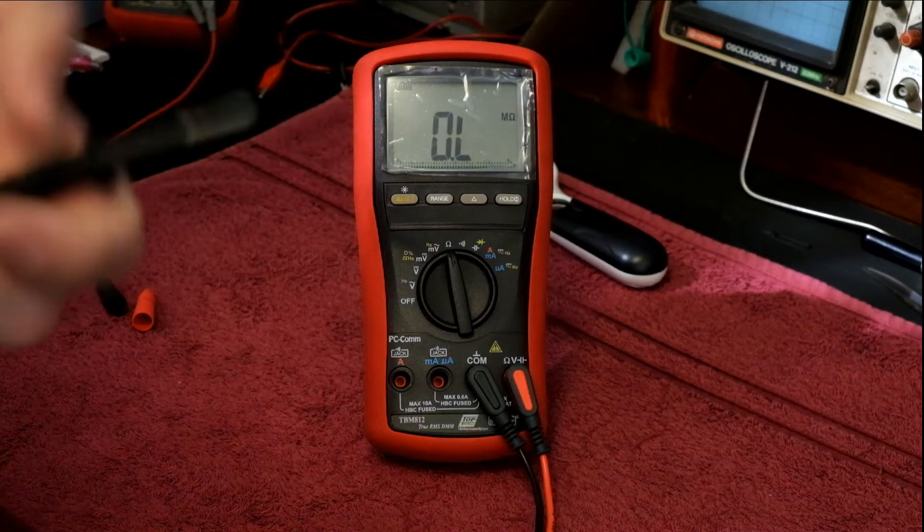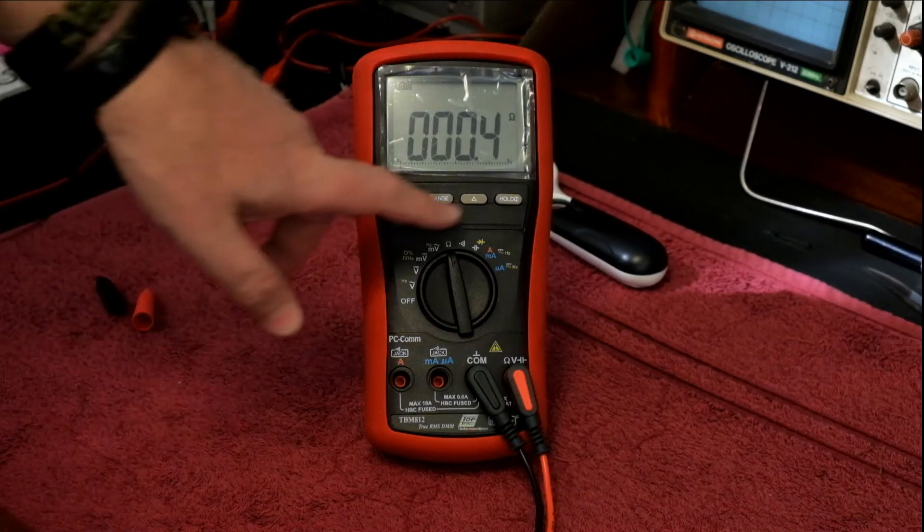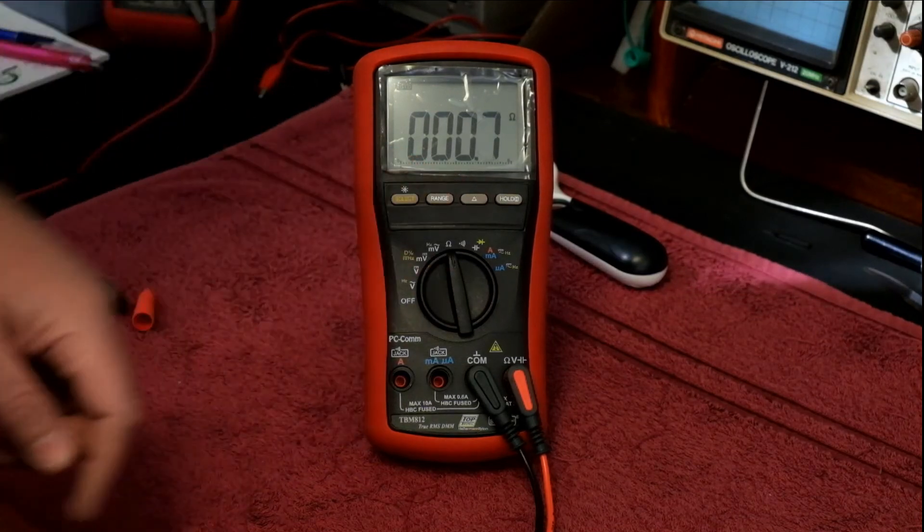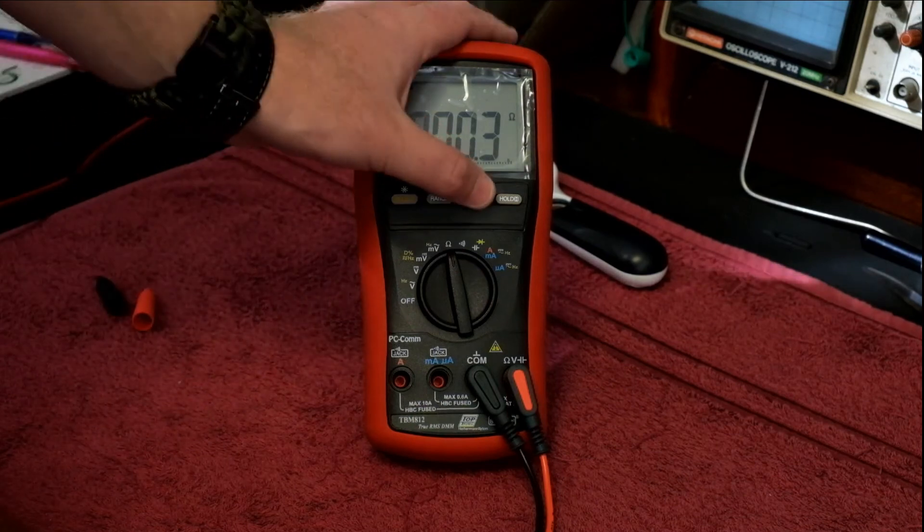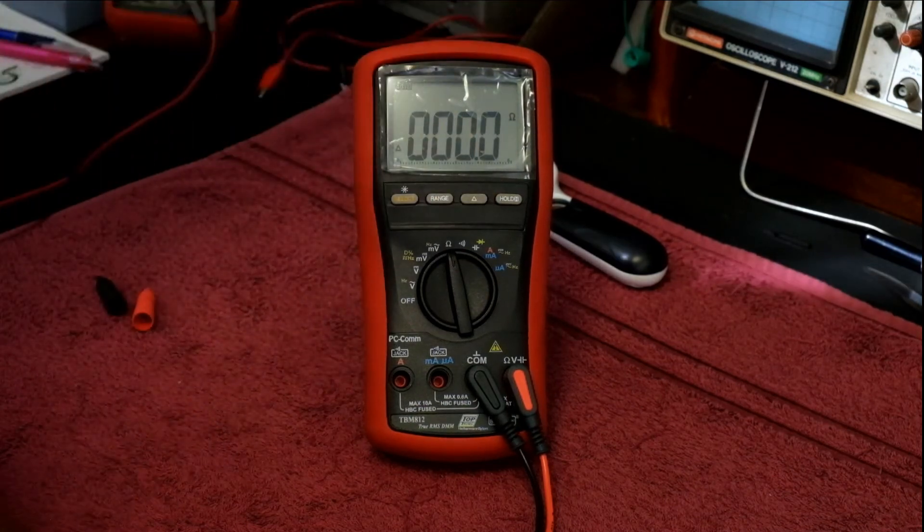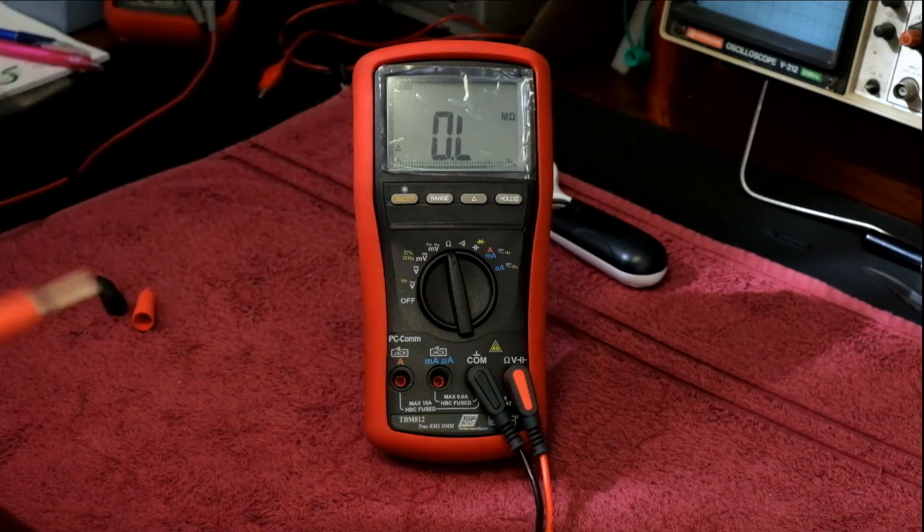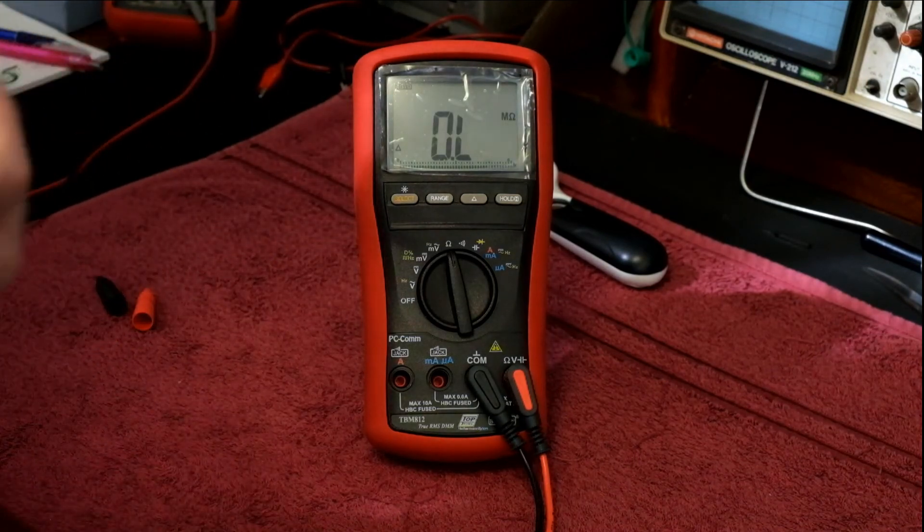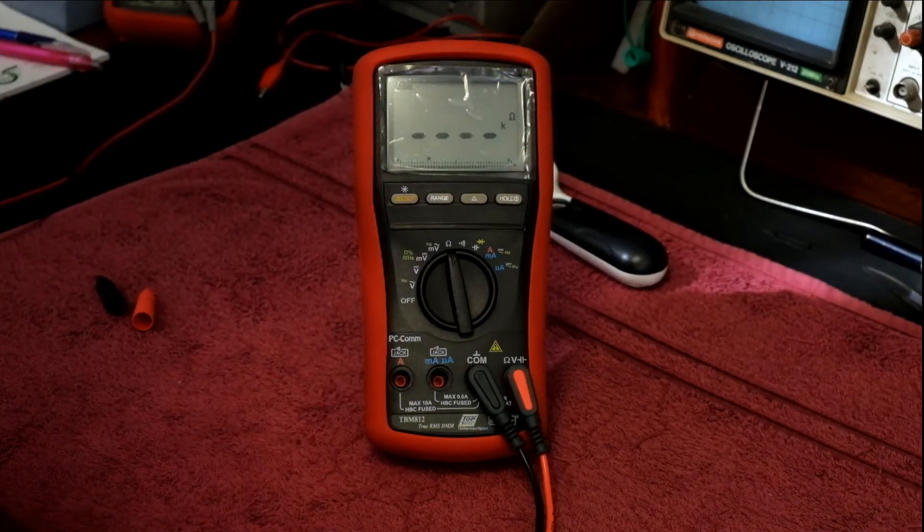So if the resistance of your leads is say 1 or 2 ohms, you can take a reading relative to that. Like if I short the two leads out, we do have some resistance there. If you want to get 100% accurate 0 resistance, you can take your measurement now and it will be more accurate.